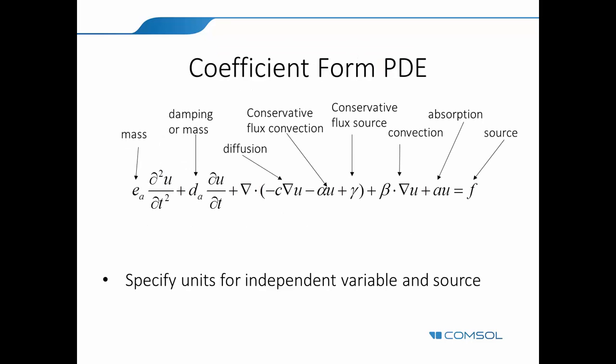Let's start with the coefficient form PDE. It works really with a template. There is this big template which says, if your dependent variable, the variable you're trying to solve for, let's say you called it U, then you get this equation where you have to specify the mass term E, the damping or mass term D, the diffusion coefficient C, the flux coefficient, convection coefficient, absorption coefficient, and source terms. And this can be fixed numbers, or they can be functions of your spatial coordinates and time.